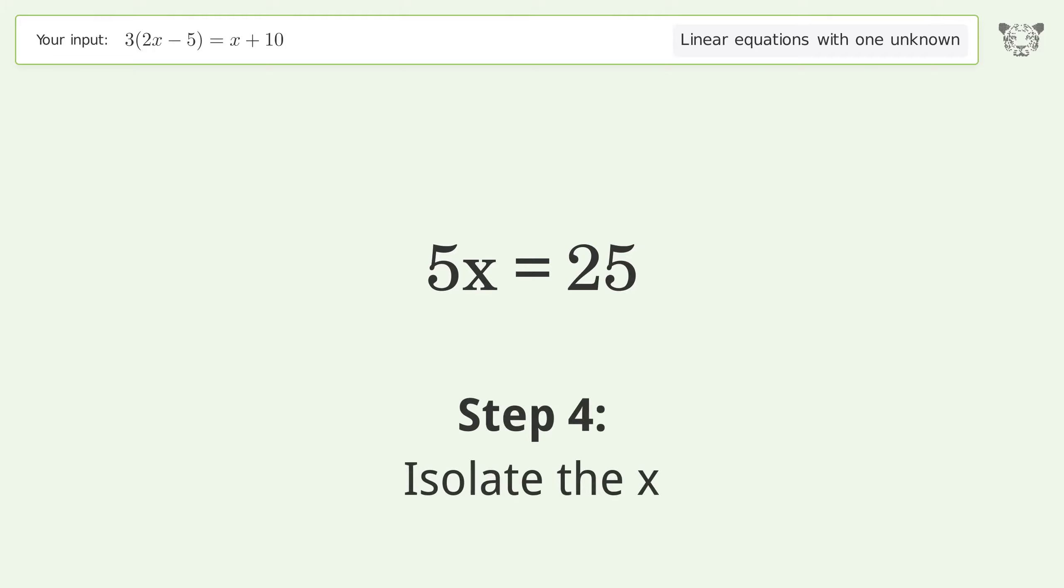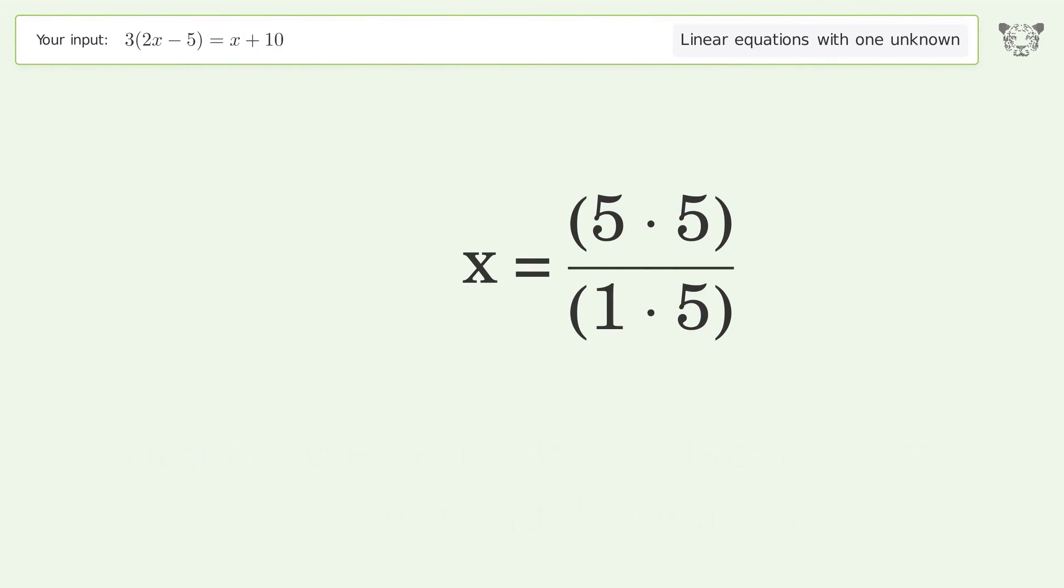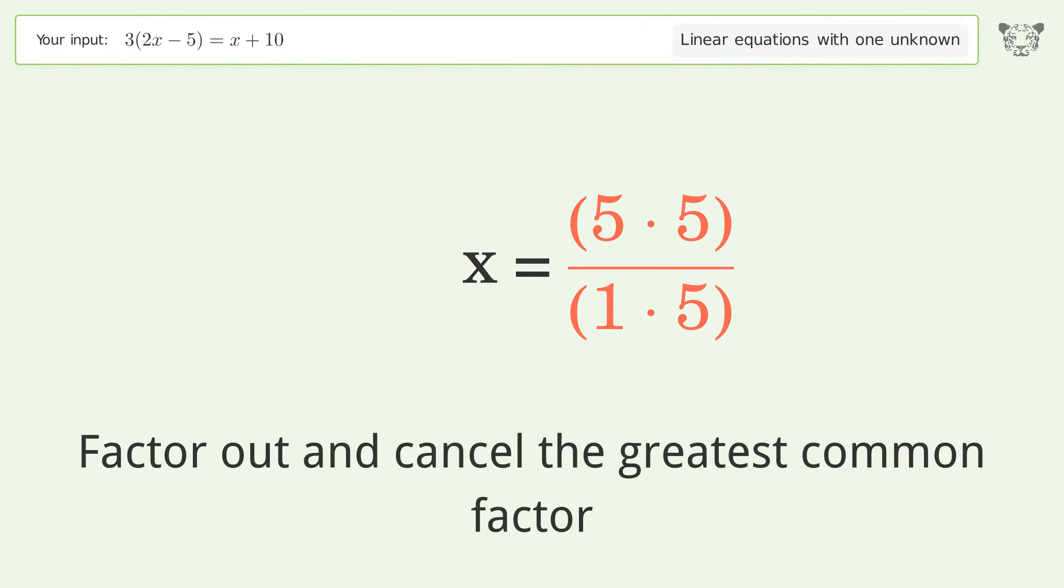Isolate the x. Divide both sides by 5. Simplify the fraction. Find the greatest common factor of the numerator and denominator. Factor out and cancel the greatest common factor.